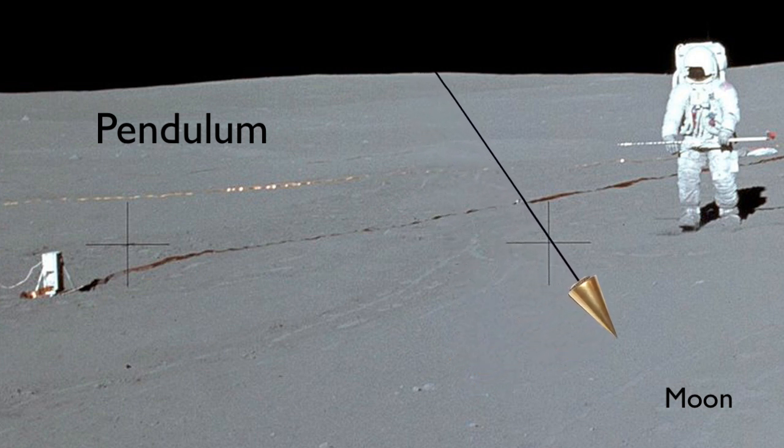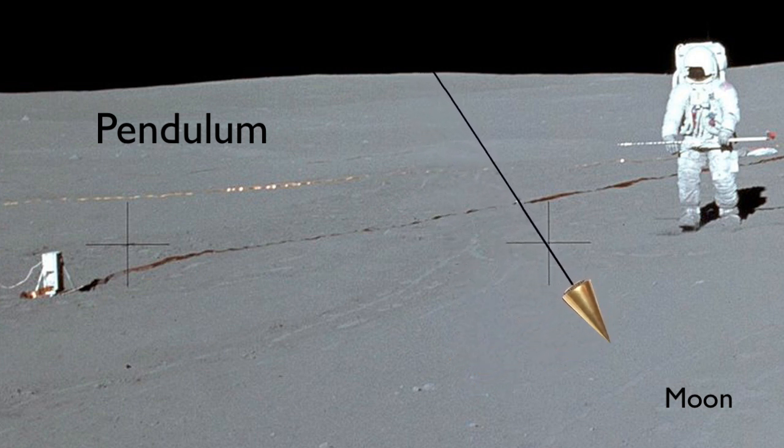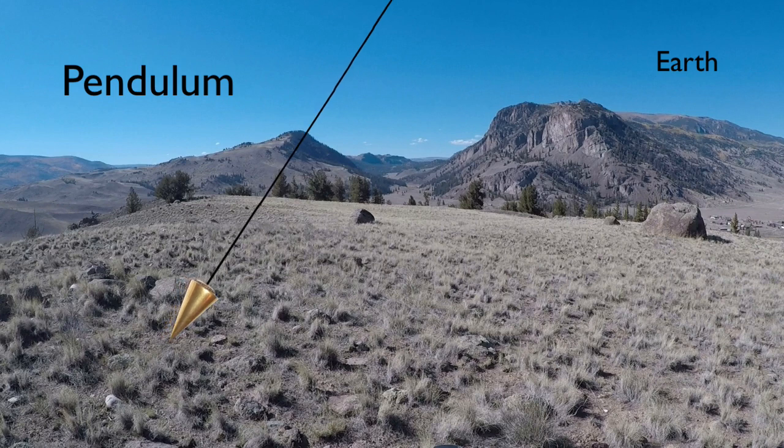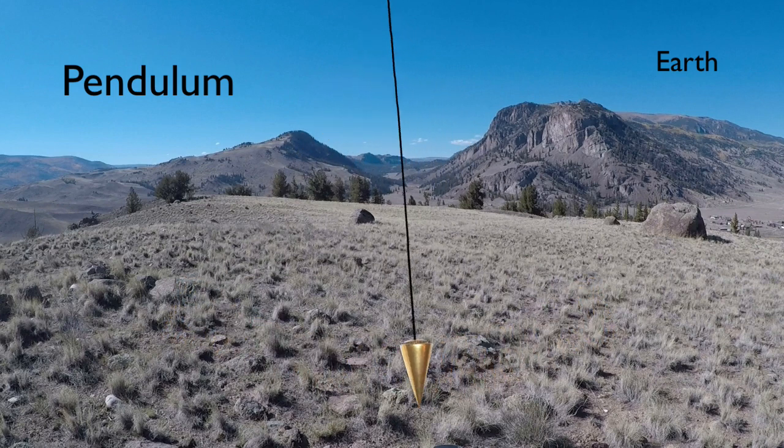The same pendulum swinging on the moon would take longer to swing back and forth. But on a given planet, all objects fall with the same acceleration regardless of mass. That's why the mass of the pendulum has no effect on the period.